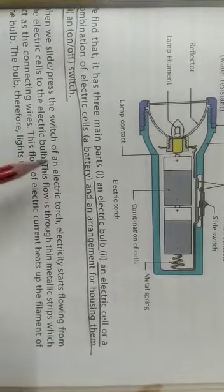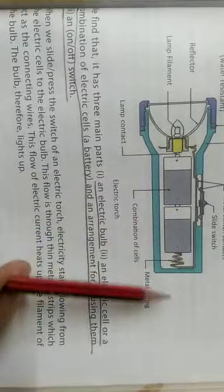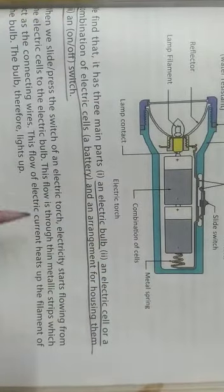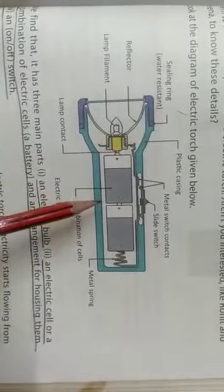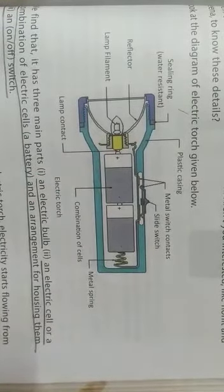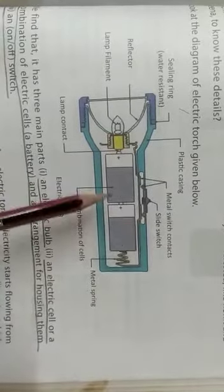A cell is a simple device having positive and negative terminals. When two or more cells are connected, these are said to be a battery. Here we have taken an electric torch as an example.